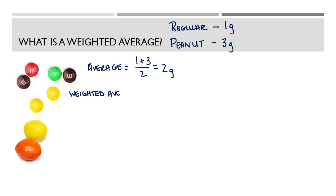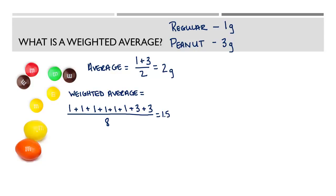A weighted average takes into account the amounts of different things that you have — it doesn't make them all equal. We have more regular M&Ms than peanut M&Ms, so they're going to be counted as more. We have 6 regular M&Ms with a mass of 1 gram and 2 peanut M&Ms with a mass of 3 grams, giving us a weighted average of 1.5 grams. This represents our sample, and since there are more regular M&Ms, the number is closer to 1 than to 3.